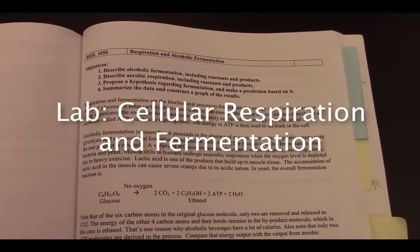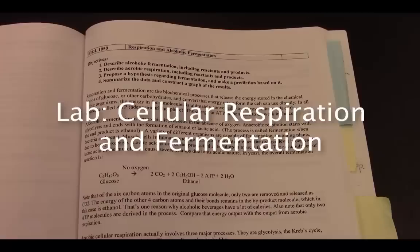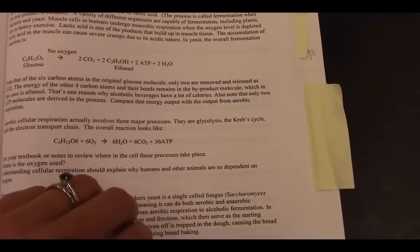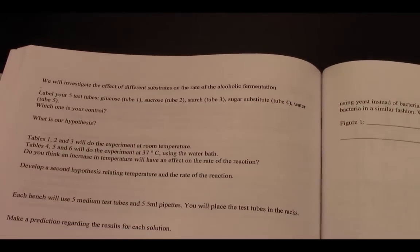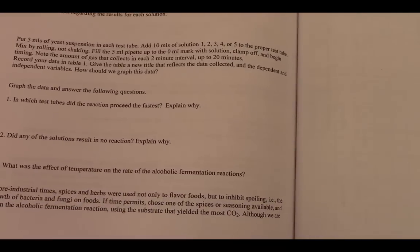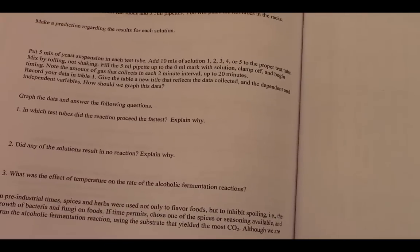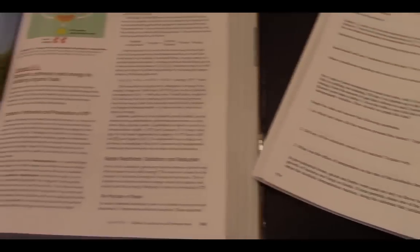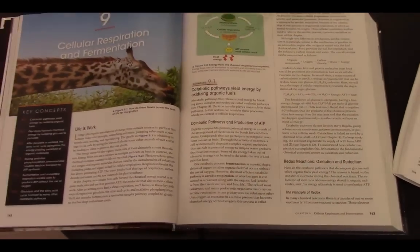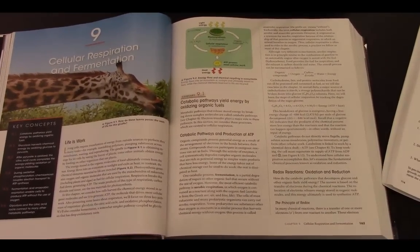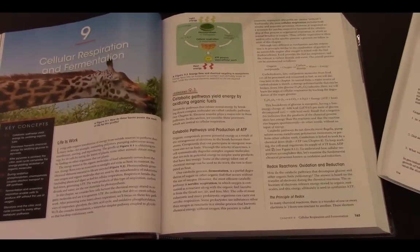In this week's lab, you'll be studying how living things break down fuel sources and use that fuel source to fuel their chemical reactions within their bodies, and how a byproduct of carbon dioxide is produced. We call this cellular respiration. If you turn to pages 162 and 163 in your textbook, you can get a good intro to cellular respiration and fermentation.